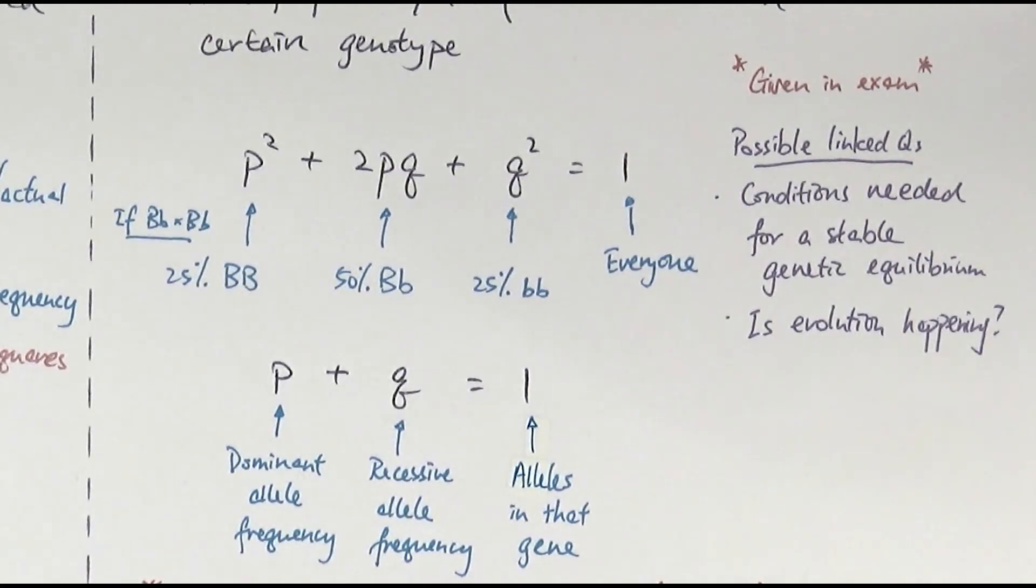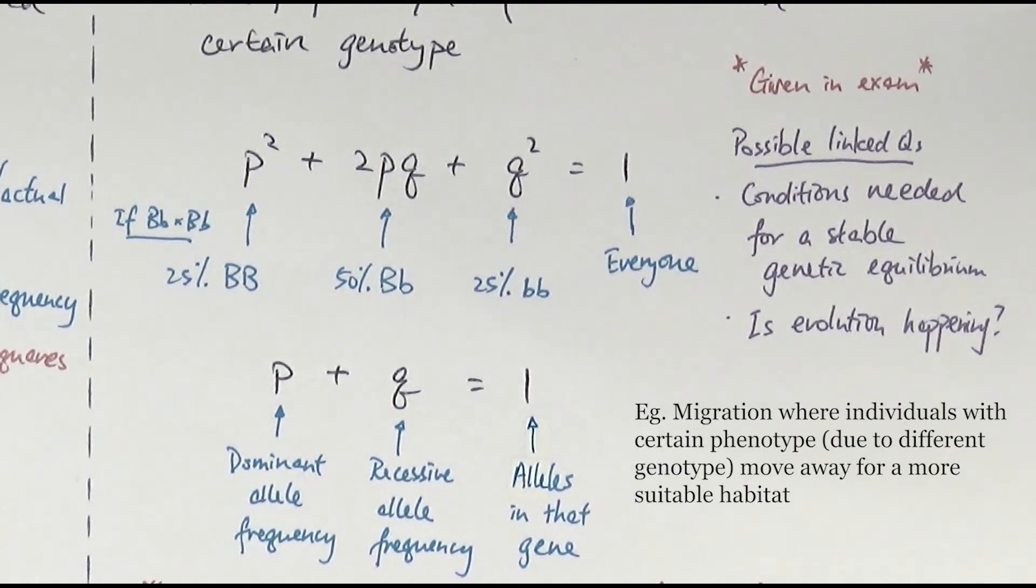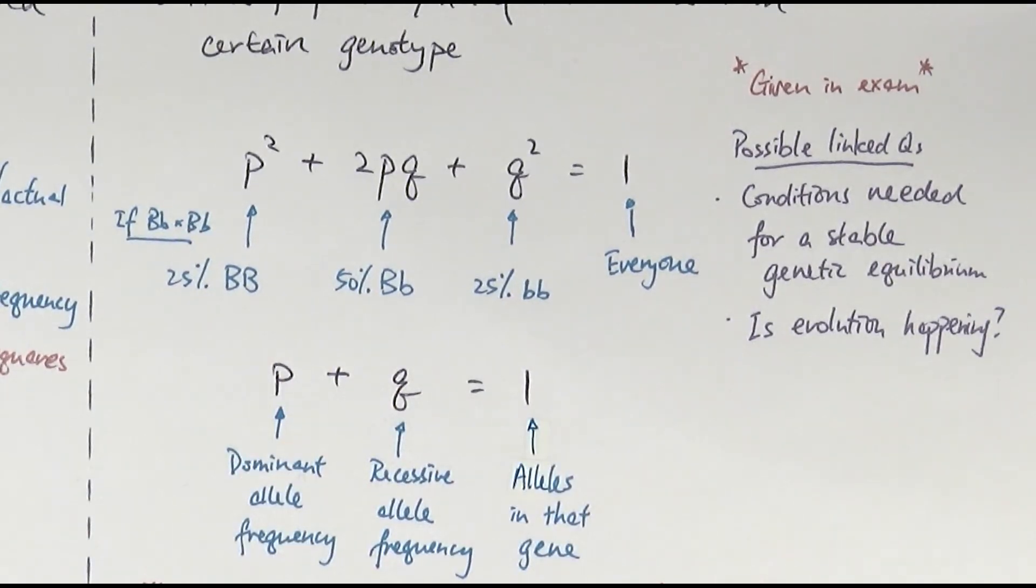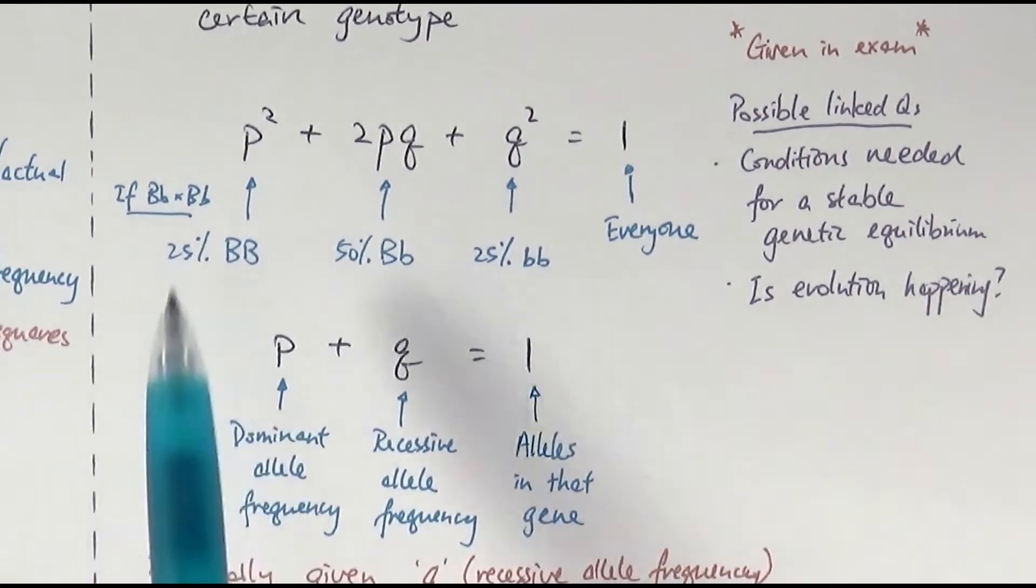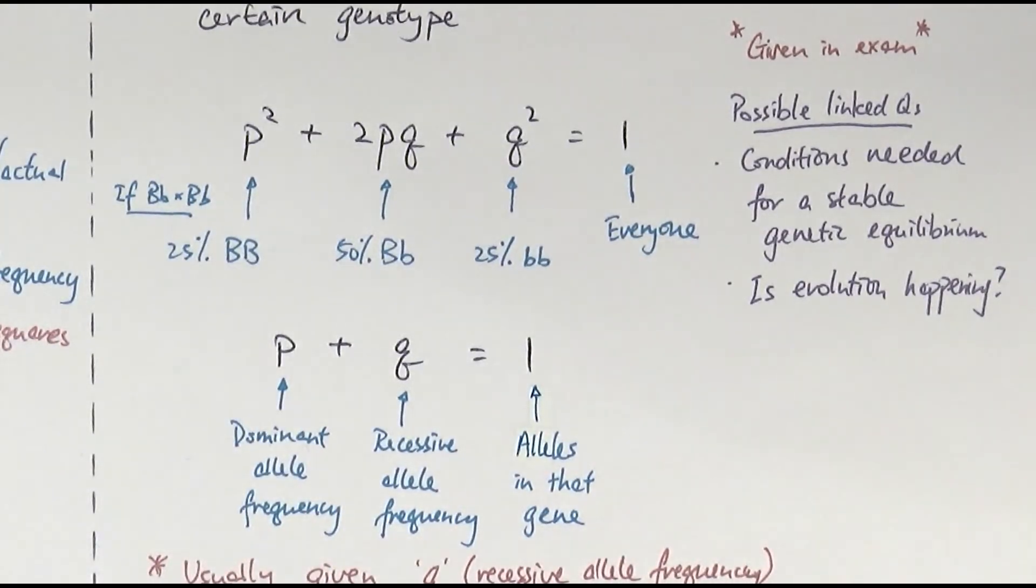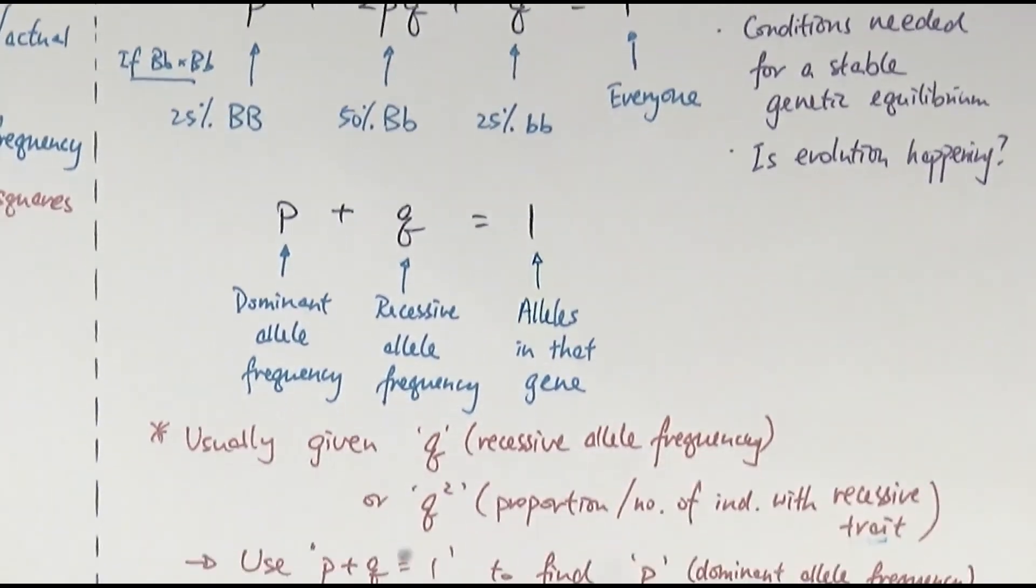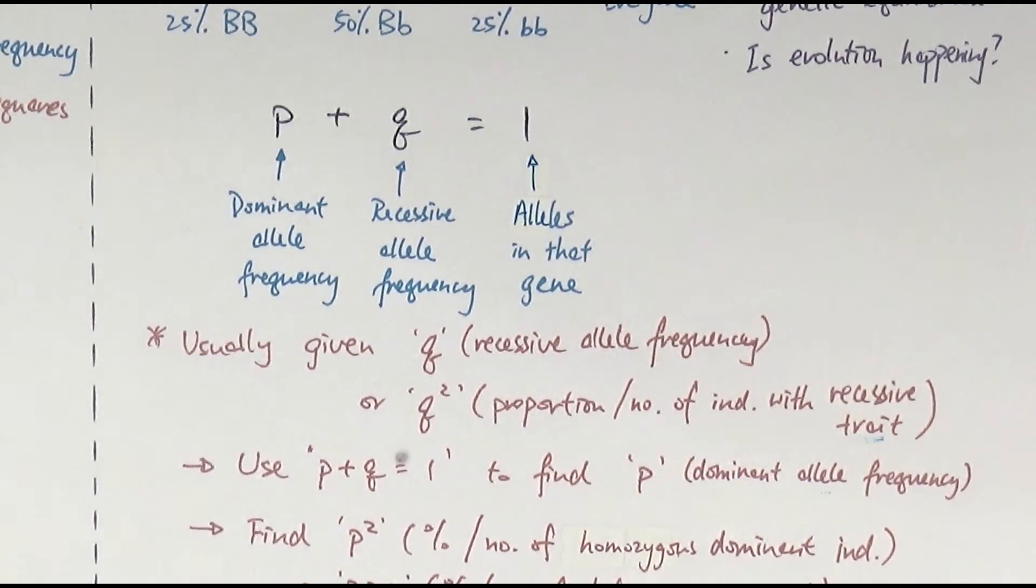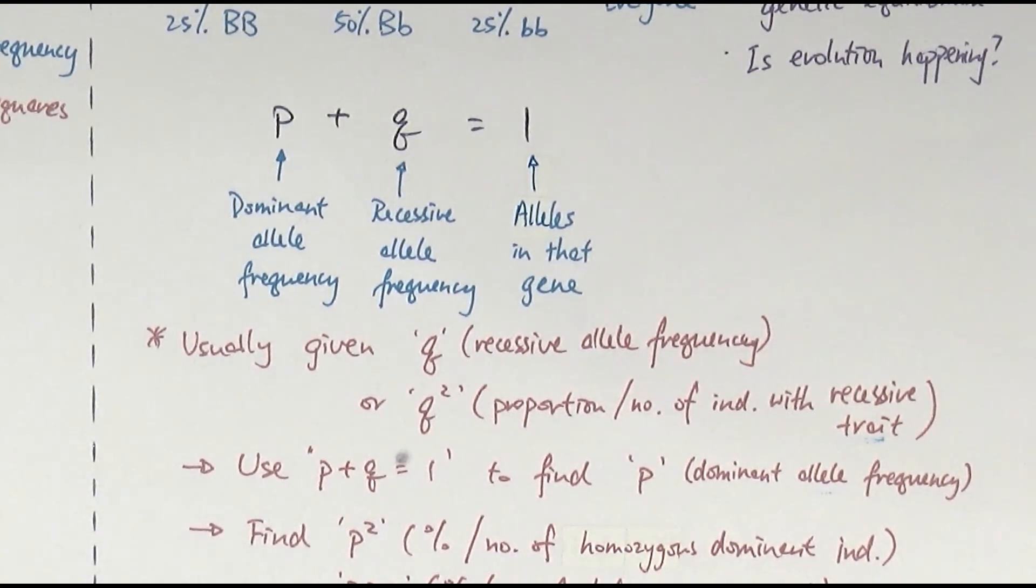The other types of questions that they might link to the calculation would be actually saying, can you suggest one or two conditions needed for a stable genetic environment? So saying if there's no evolution happening. So one example would be migration or mutation. If migration is happening, then that would disturb the equilibrium in that particular situation, then obviously that would not be a stable one. So you can't really apply this particular principle to it. And that links to saying, okay, whether evolution is happening or not. But most of the time they will probably do the calculation and just make sure you know these two equations, which will be given to you in exam, and just work your way backward. Just be very careful not to get tripped up and, you know, distinguishing what is q, what did they give you? Did they give you q or q squared, or whatever it would be?